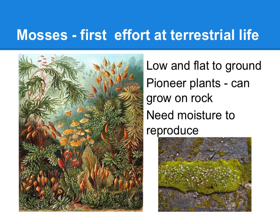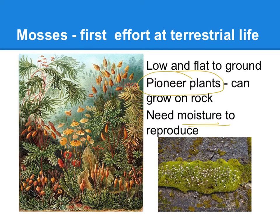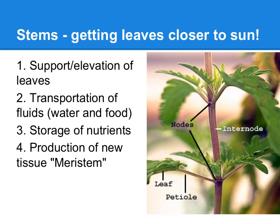Mosses were the very first effort for plants to live on land. They're flat to the ground and we call them a pioneering plant because they can grow on rock. However, they need liquid water to reproduce, and that is going to be their Achilles heel, as we will see.